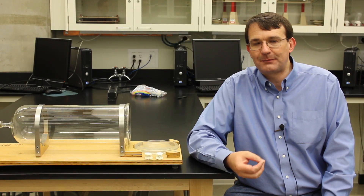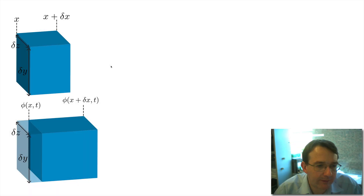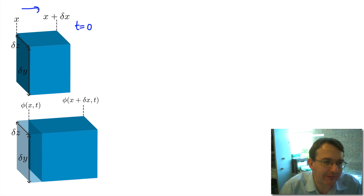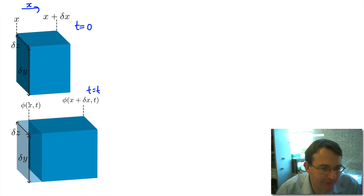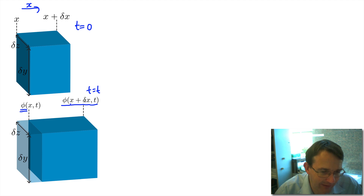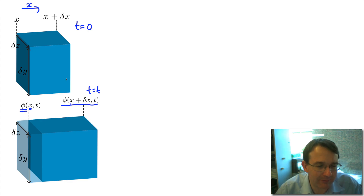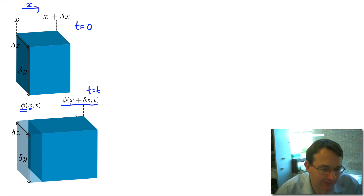Let's look at the displacement of an element of a fluid. We have a volume of fluid that a wave is passing through at time t equals zero, with the wave passing in the x direction only, not in y and z. At some later time t, this face of the element has been displaced by phi, which is a function of both position and time. The other face has been displaced by phi with the argument x plus delta x, because the displacement varies with the physical position of the medium.